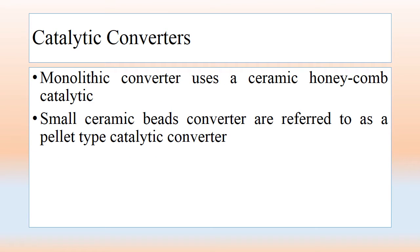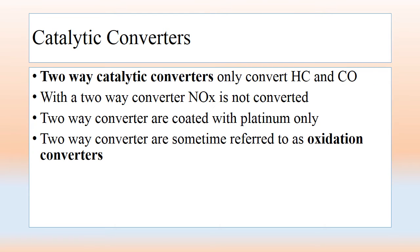The monolithic converter uses a ceramic honeycomb catalyst, while small ceramic bed converters are referred to as pellet type catalytic converters. Two-way catalytic converters only convert HC and CO; NOx is not converted in a two-way converter. Two-way converters are coated with platinum only.